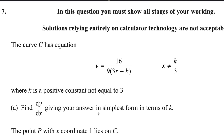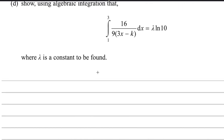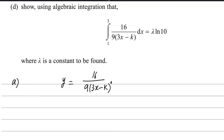Find dy by dx, giving your answer in simplest form in terms of k. We need to differentiate this y. First part: y equals 16 over 9 into 3x minus k. This denominator can be taken up, so y will be equals to 16 over 9 into 3x minus k to the power negative 1. This is the easiest way to differentiate this type of function. Otherwise, you can apply the quotient rule here as well, but this will be easier.